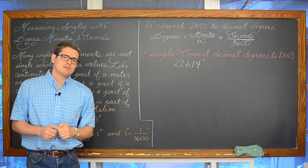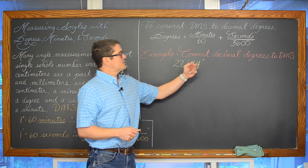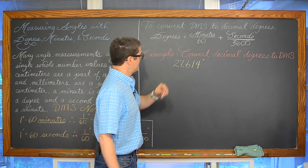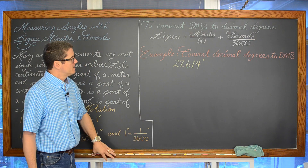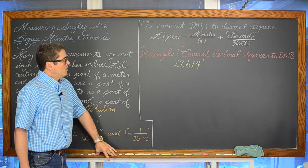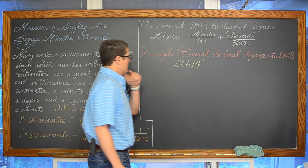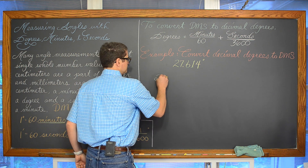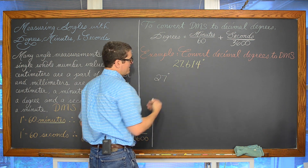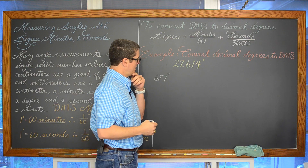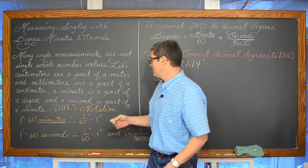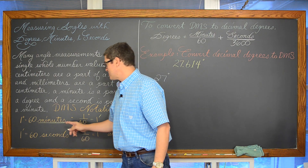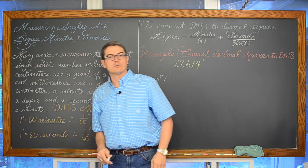But first, we are going to convert decimal degrees to the unit of measure of degrees, minutes, and seconds. We have 27.614 degrees. This is of course a whole number value — we have 27 degrees. And then we have this part of a degree. Well, that is what minutes are — a part of a degree — and there are 60 minutes in a degree.